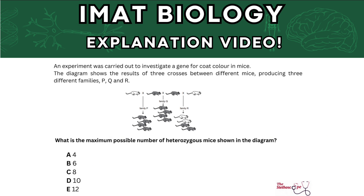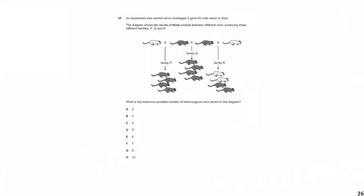Our first question says that an experiment was carried out to investigate gene coat color in mice. The diagram shows the result of three crosses between different mice producing three different families P, Q, and R. It asks: what is the maximum possible number of heterozygous mice shown in the diagram? The whole purpose of this question is to find the maximum number of heterozygous mice, so we need to assume as many individuals as possible are heterozygous.